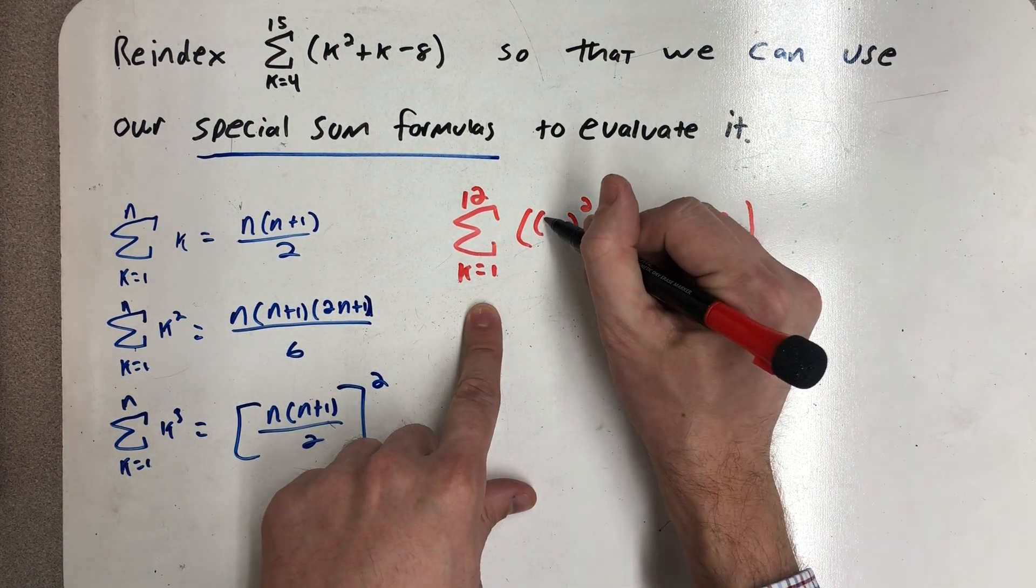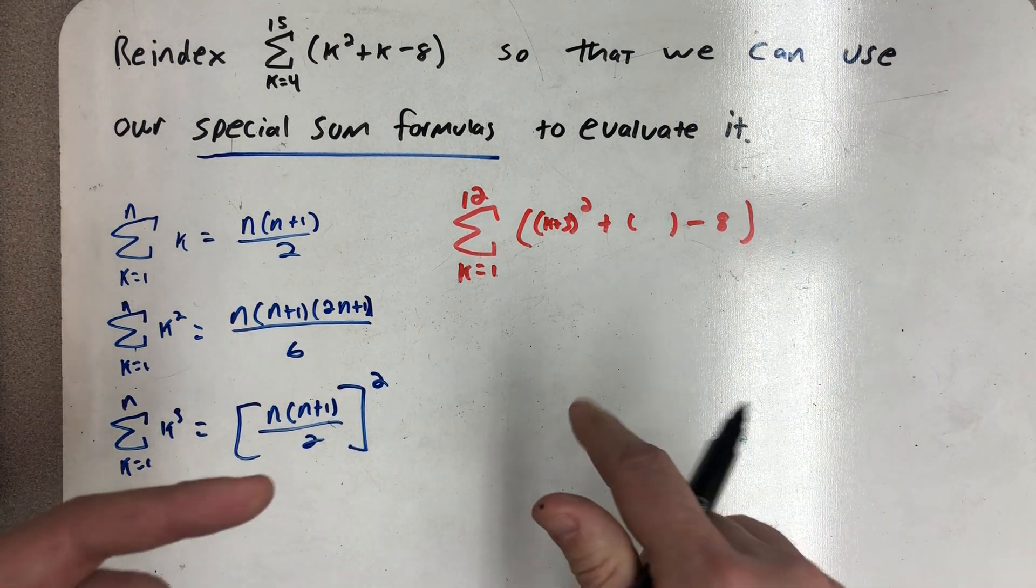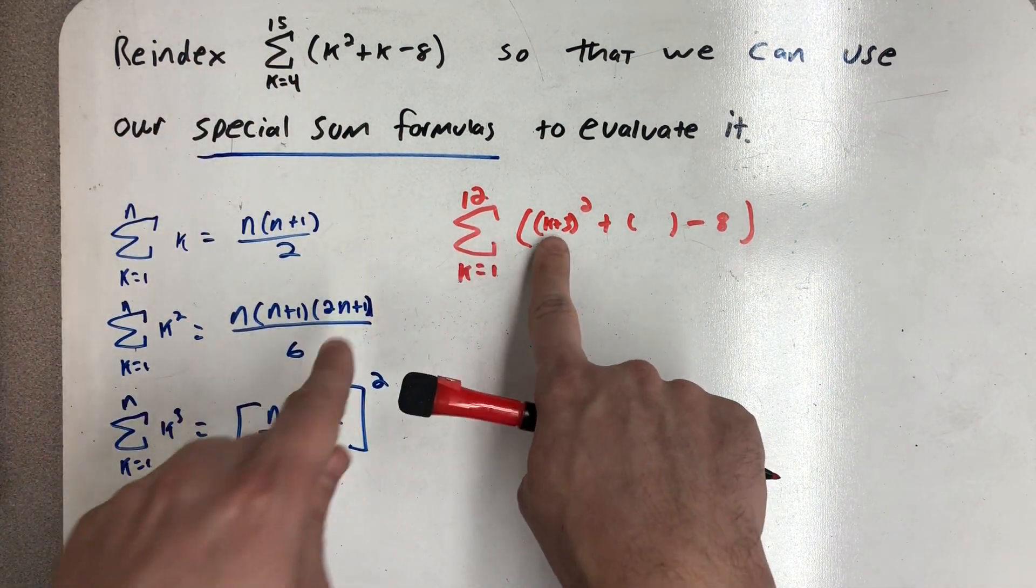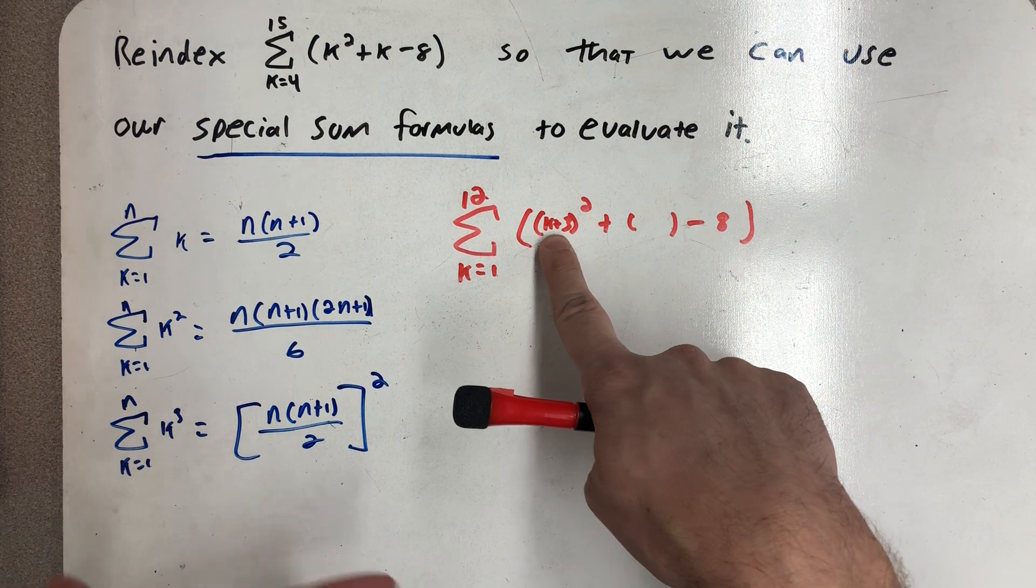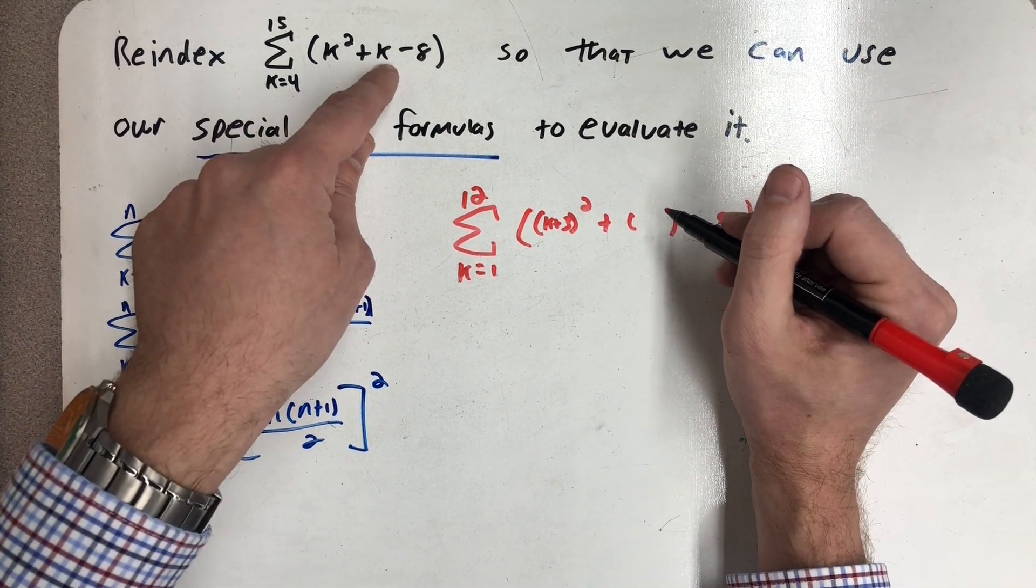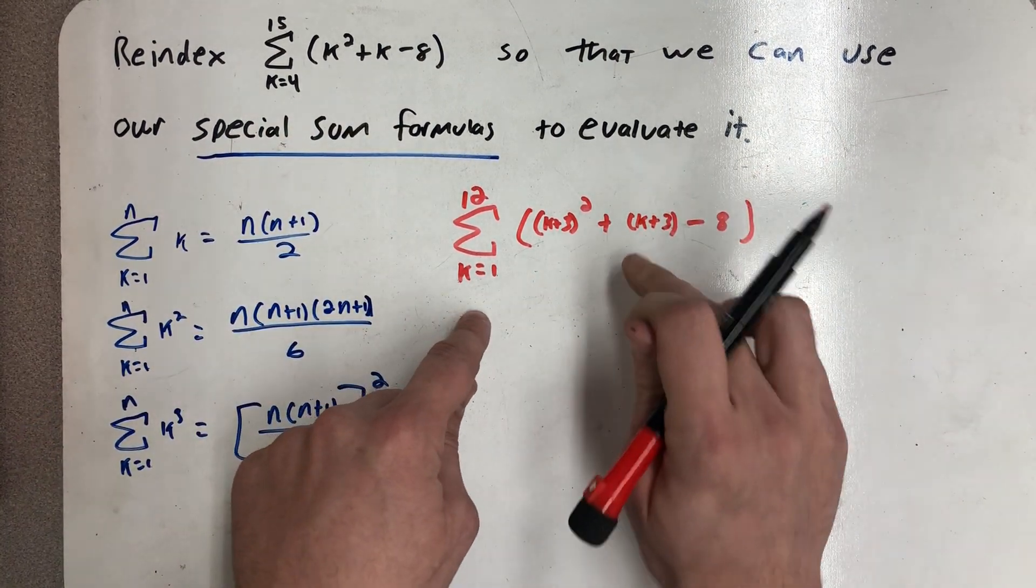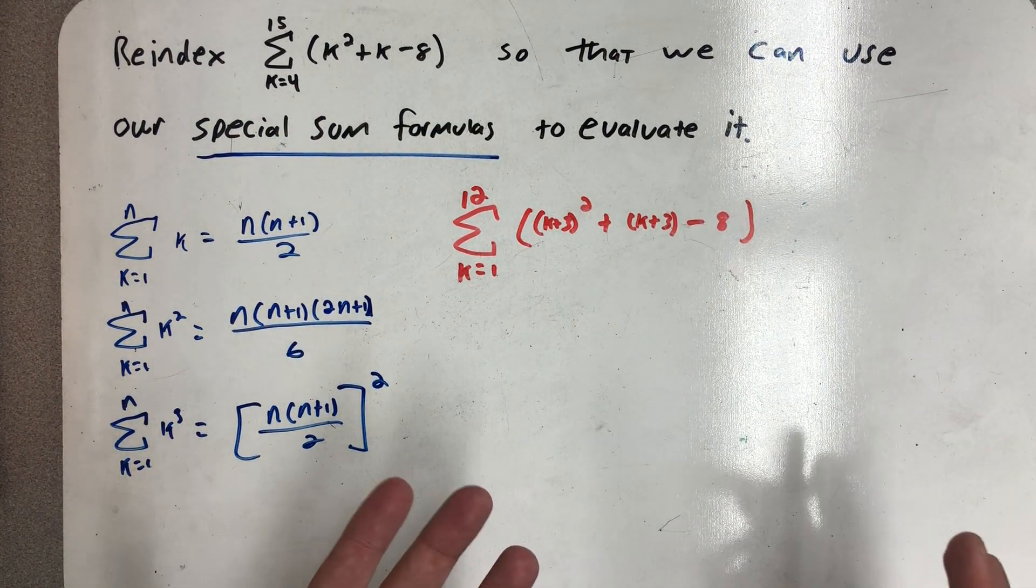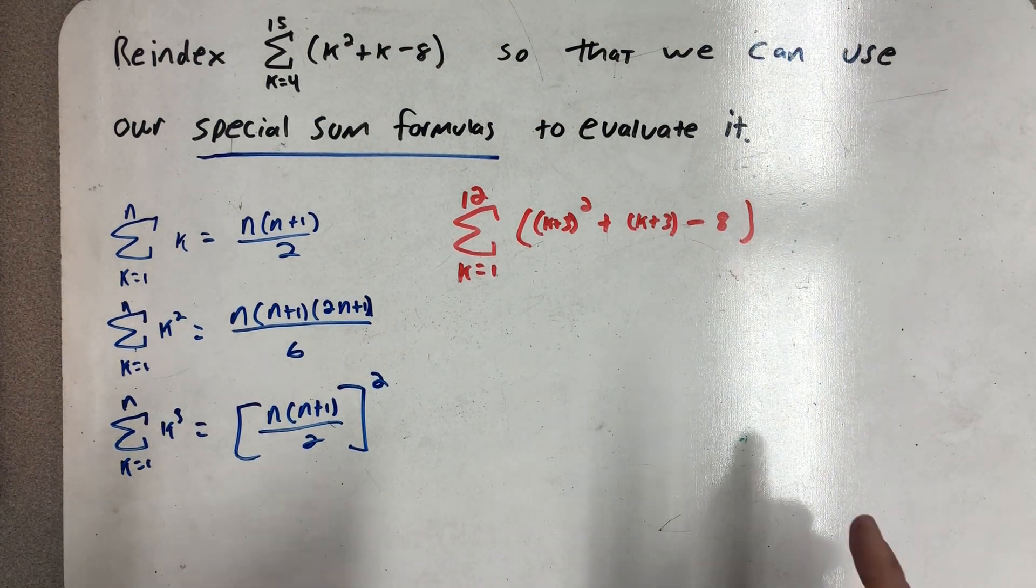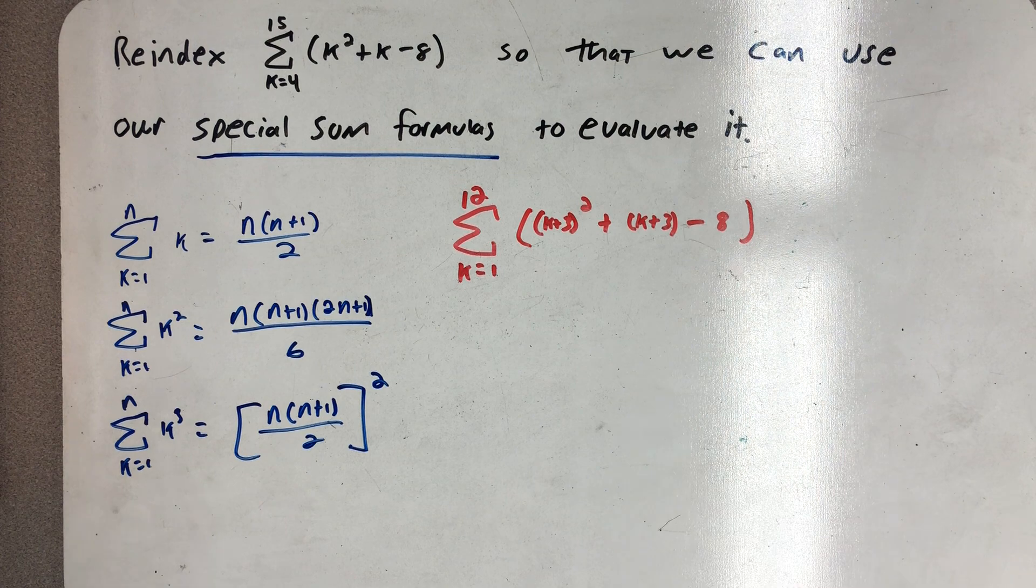I took 3 away from all the k's so I can undo that by adding 3 to each one of them in here. Same thing here, I would have plugged a k in and that would have been a plus 4, so now I need a k plus 3. I took 3 away from all the k's so inside here I have to add 3 back.